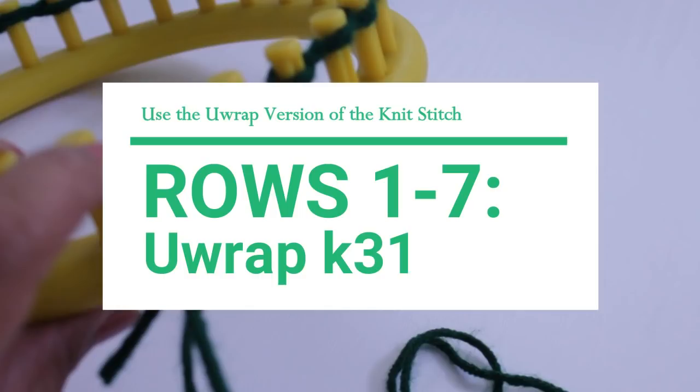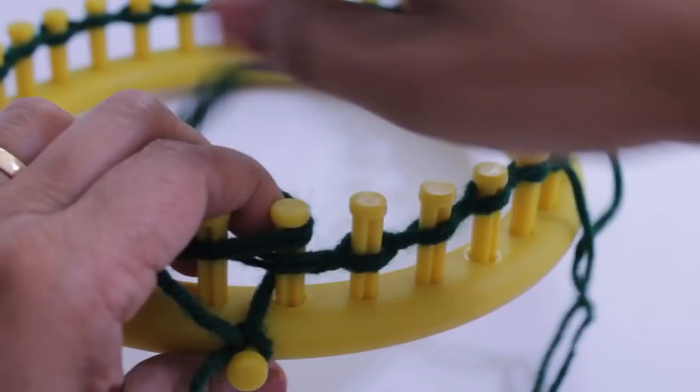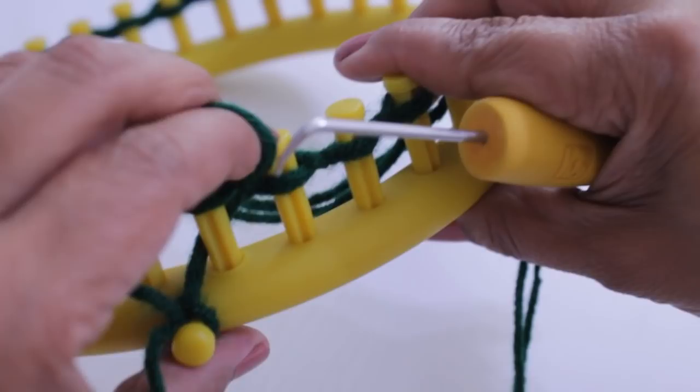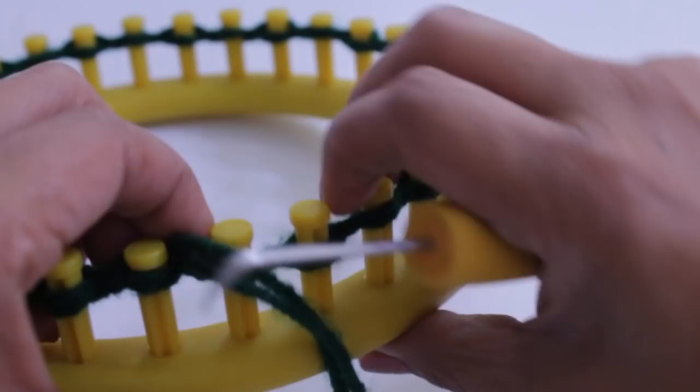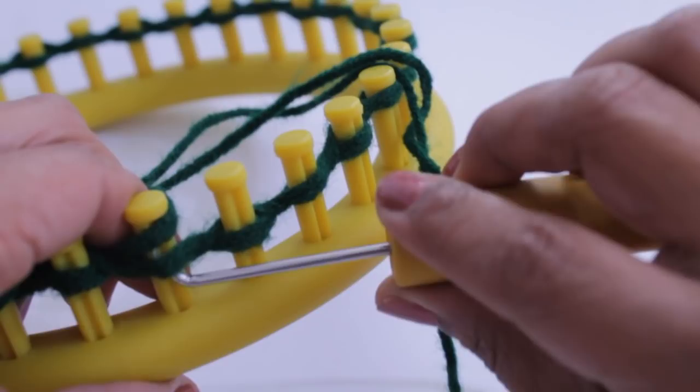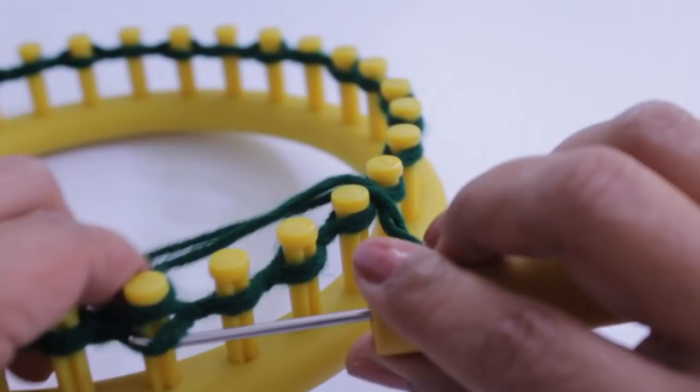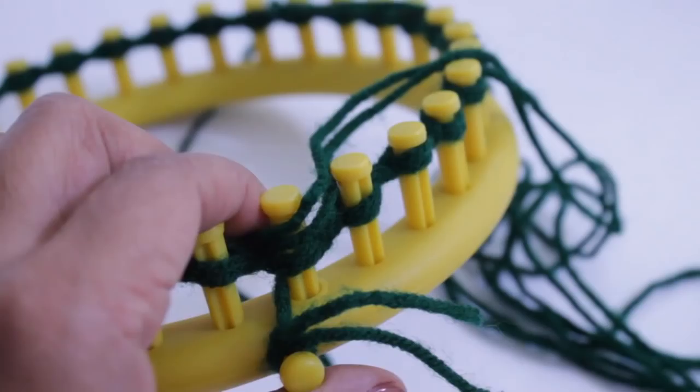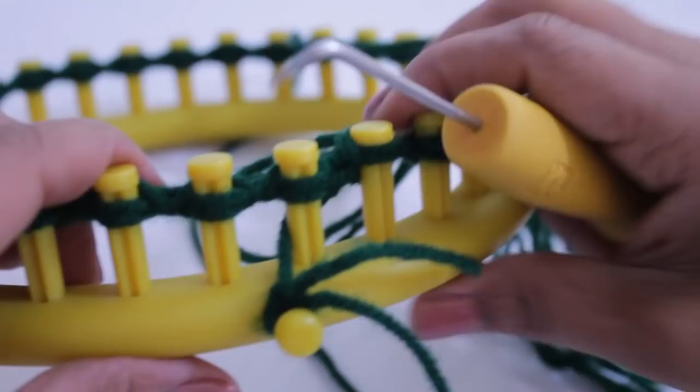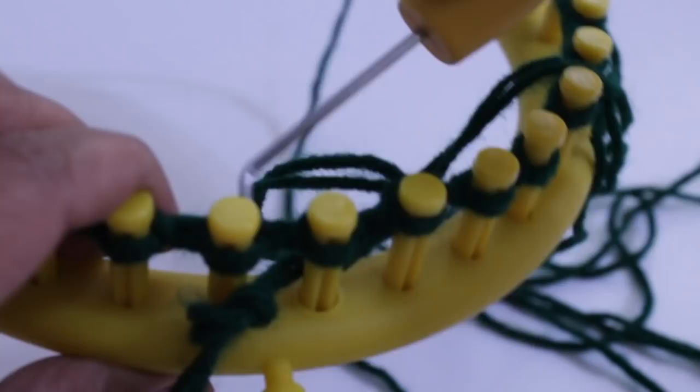So you're done with your cast on and now you're ready for rows one through seven, where you're just gonna knit the row. And we're gonna knit all 31 pegs using the U-wrap version of the knit stitch. So for that, you're half wrapping your peg and then you knit off. You take the working yarn and you're going to half wrap and knit off. And you're going to do that for seven rows in total. After a few rows, it's a good idea to take the knot off the anchor peg and then just keep knitting.